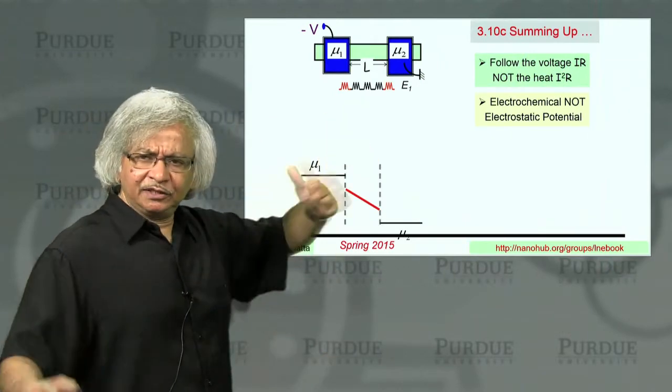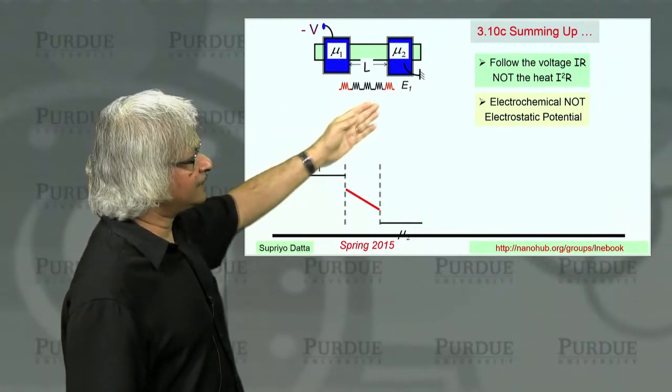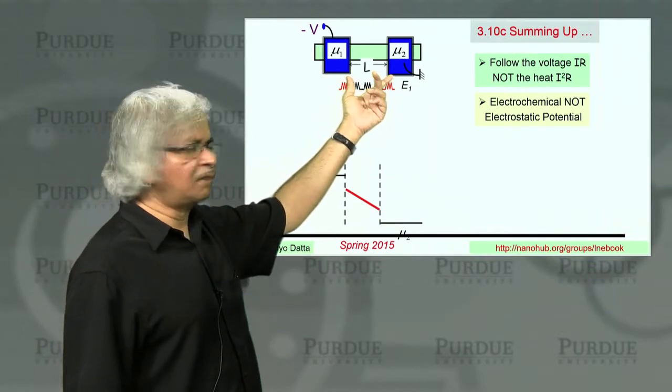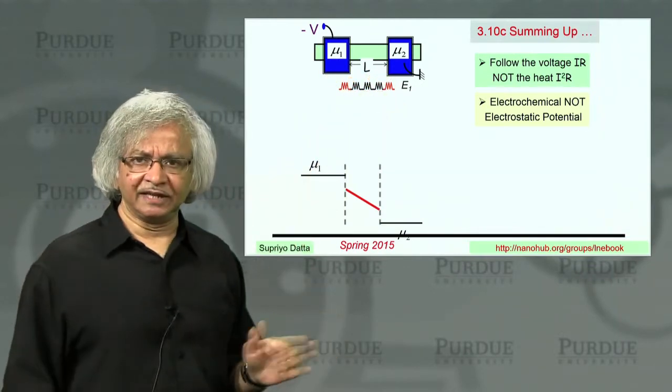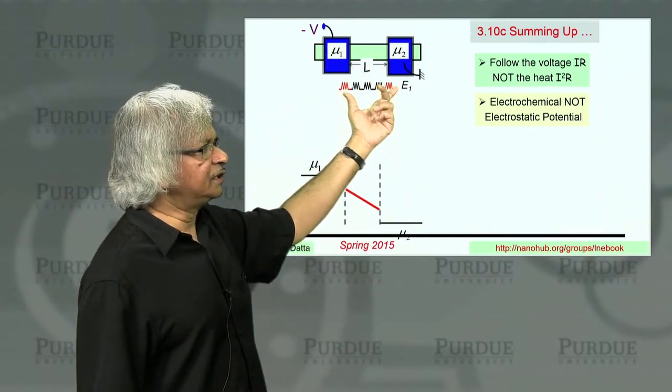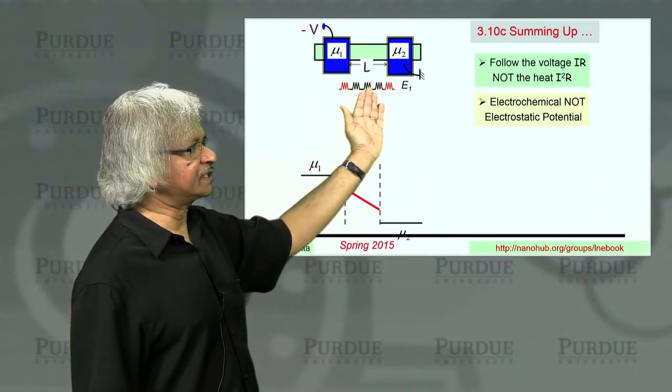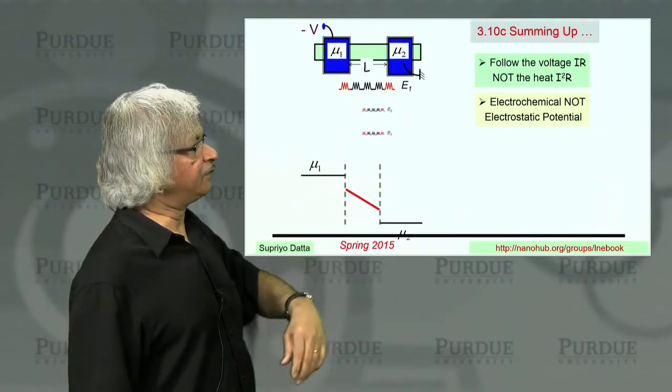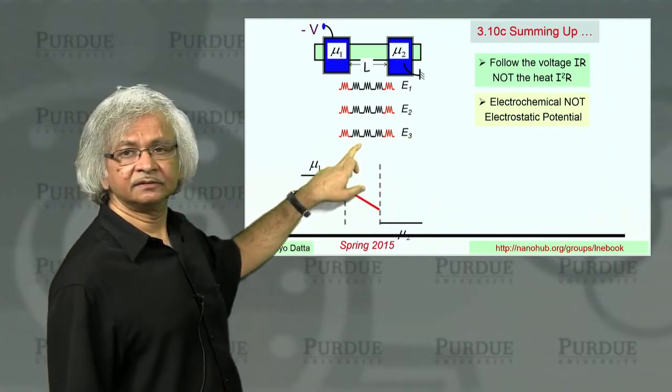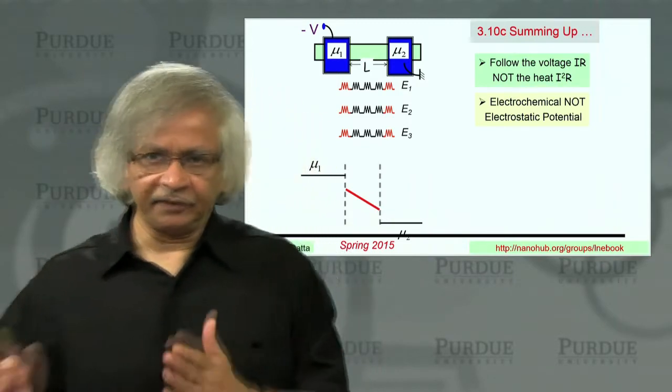Now, one example that actually we didn't talk about in this unit much, but let me just point out, is that the general approach we have been using is that we talk of a small section in which we can ignore the inelastic scattering. So all the inelastic scattering is in the contacts, and so different energy channels are all independent. So for a particular energy, you could think of it as a series of resistors. If you look at another set of energy, you've got another set of resistors, another energy, another set, and so on. And what you have ignored usually is the inelastic scattering in our thinking.